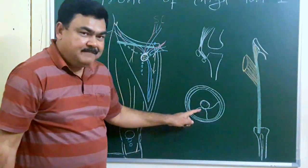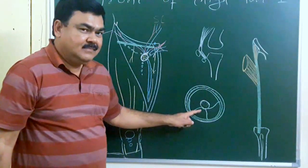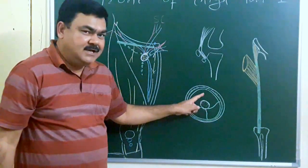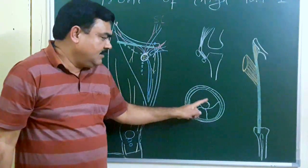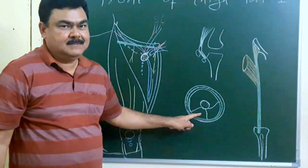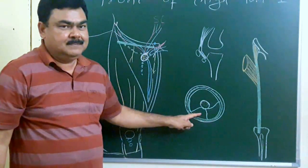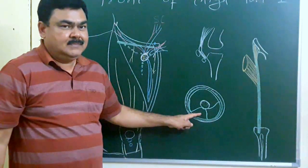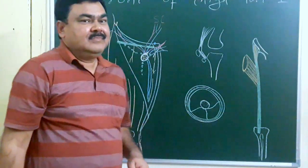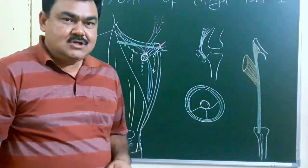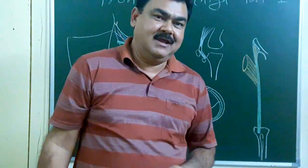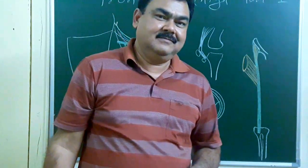By these septa, the thigh is divided into the anterior compartment, medial compartment, and posterior compartment. This is all about the skin, superficial fascia, and deep fascia of the thigh. Thank you.